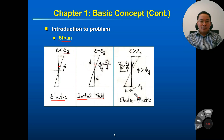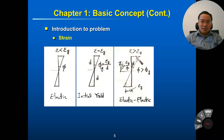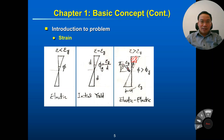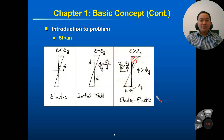Keep increasing the moment and we enter the elastic-plastic phase. Now the strain at the extreme fiber is greater than εy. So the strain equals εy at some depth, with the outer part being plastic and the inner part remaining elastic. The boundary depth ȳ = εy / κ, and κ is greater than κy.